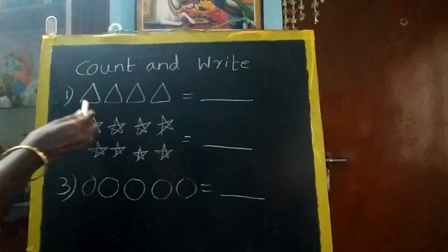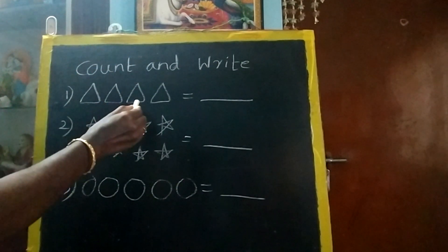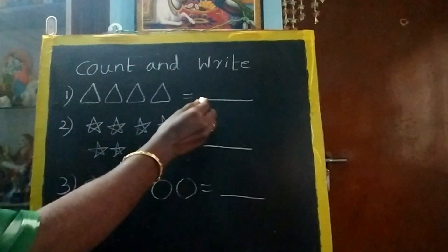This is a triangle. So whenever you count, keep your pencil on each picture. 1, 2, 3, 4. So there are 4 triangles.